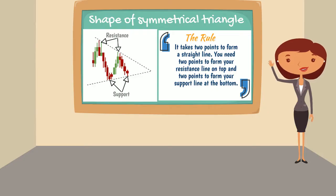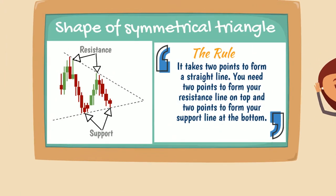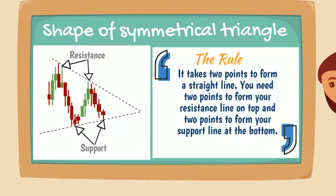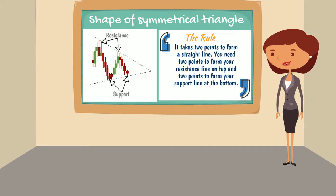Welcome to the Symmetrical Triangle Tutorial. The rule for the general shape of the Symmetrical Triangle is, it takes two points to form a straight line. So you need two points to form your resistance line on top and two points to form your support line at the bottom.